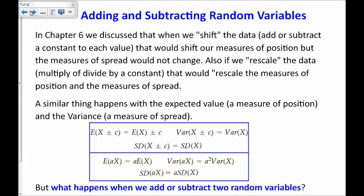The next topic is about adding and subtracting random variables. In chapter six, we discussed that when we shift the data by adding or subtracting a constant to each value, that shifts our measures of position but the measures of spread do not change. If we rescale the data by multiplying or dividing by a constant, that rescales both measures of position and spread. A similar thing happens with the expected value and the variance or standard deviation. The key point of this chapter is what happens when we add or subtract two random variables — not a constant, but another random variable.